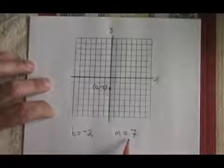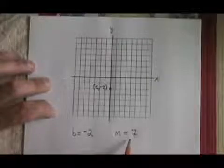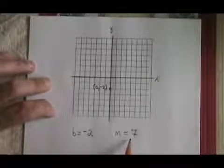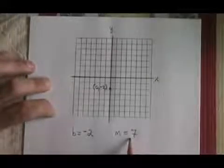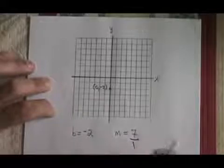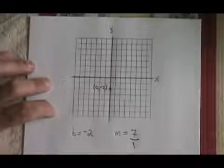My slope, though, is not in the form of a fraction. It's a whole number 7. Well, all I have to do is convert that to a fraction. So I have to know that any whole number, if you just place it over a 1, can be expressed as a fraction in that way. My rise is therefore 7, and my run is 1.